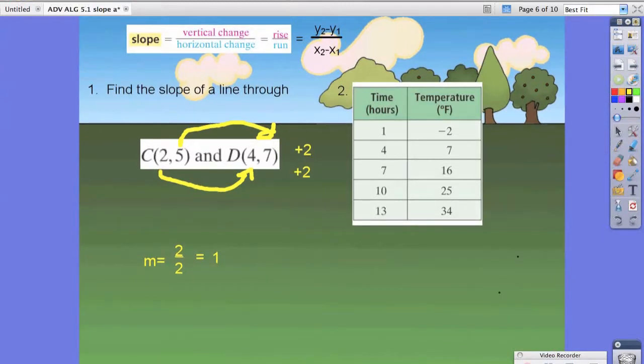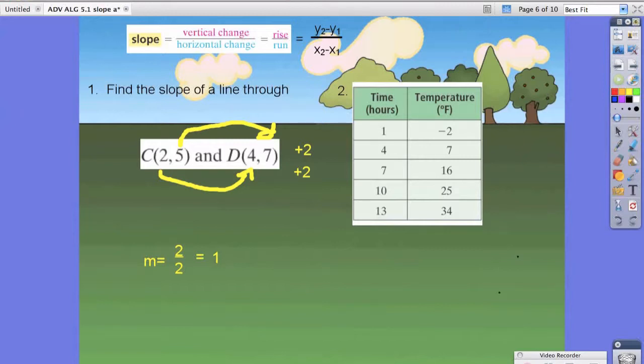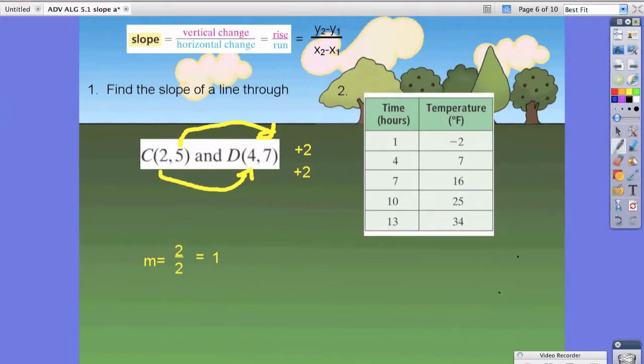Now, this one should look a little different, but it's treated the same exact way. What you want to do is pick two different values for y. In this instance, this counts as our x. And this counts as our y. Then you just pick two values.